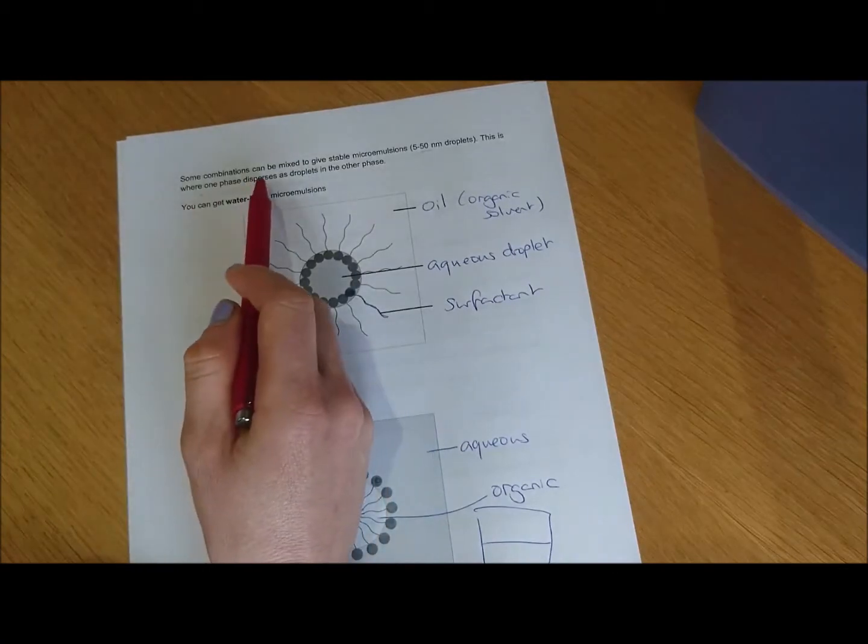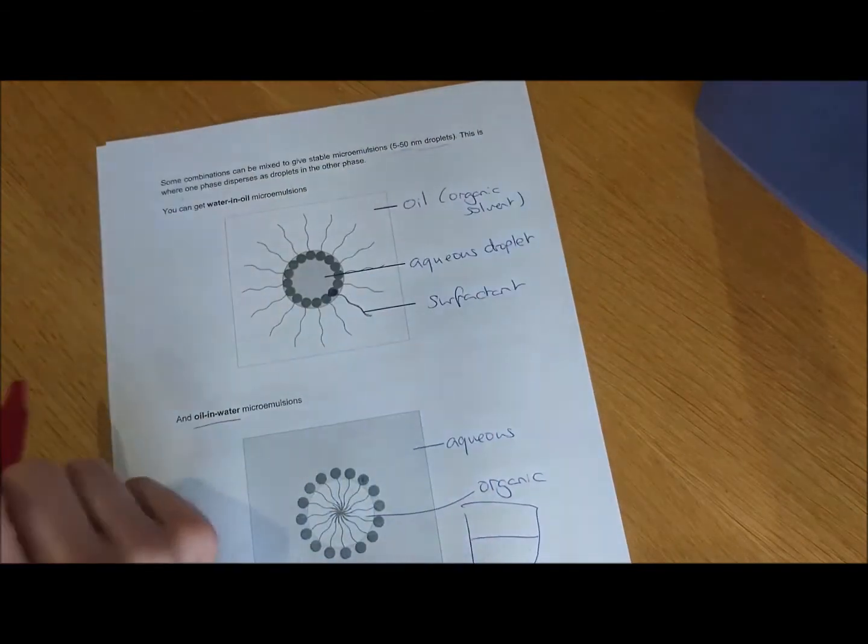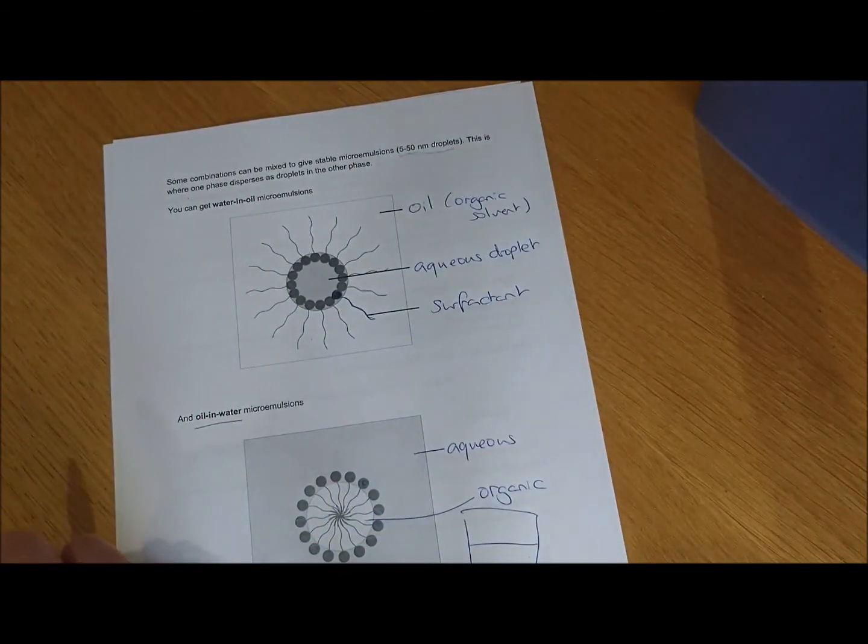What you've got there is one phase dispersed as droplets in the other phase, and the droplets that we're talking about are really quite small, 5 to 50 nanometers.